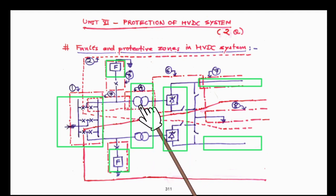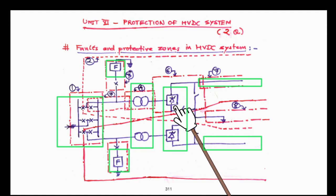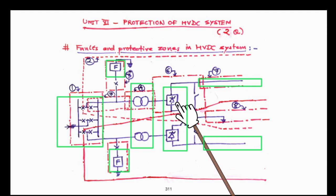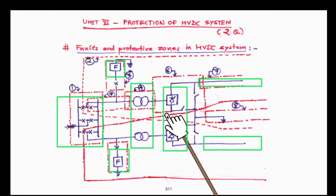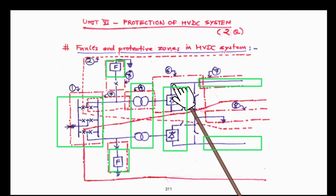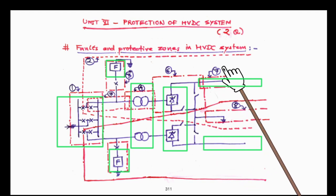There may be winding short circuit on the transformers, short circuit across the valve bridge legs or arms of the bridges, failure of the valve, misfiring of the valves, or failure in the conduction pattern of the valves — thyristors may not conduct in proper sequence. All these conditions are classified as faults and they may lead to development of conditions which will disturb the power flow and have to be rectified at the earliest.